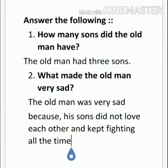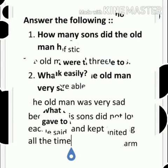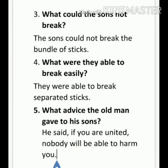Now, come to question and answer. Question 1: How many sons did the old man have? The old man had three sons. Question 2: What made the old man very sad? The old man was very sad because his sons did not love each other and kept fighting all the time. Question 3: What could the sons not break? The sons could not break the bundle of sticks. Question 4: What were they able to break easily? They were able to break separated sticks. Question 5: What advice did the old man give to his sons? He said: If you are united, nobody will be able to harm you.